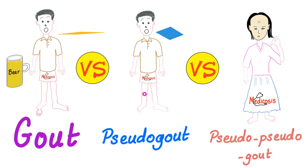Hey guys, it's Medicosis Perfectionist, where medicine makes perfect sense. Today we continue our rheumatology playlist with a great comparison among gout, pseudogout, and pseudo-pseudogout, also known as hydroxyapatite arthropathy.